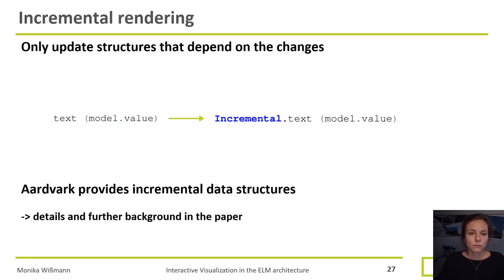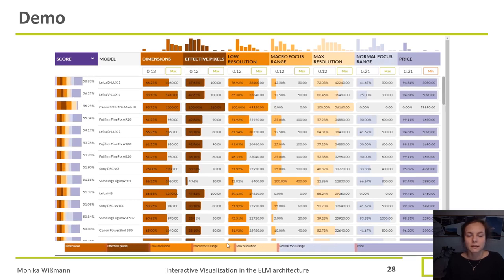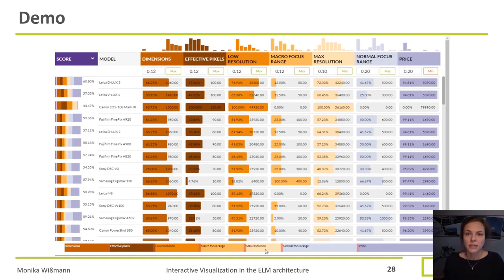If you want to know more details about the background of incremental rendering, please take a look at my paper. What we basically achieved is that we have only small changes in our code which help us make it much more performant. Let's check out our updated implementation now that we've added the incremental data structures for lists and maps in our view. We again try to drag the weighting bar and we see that the movements are now much smoother than before. We just changed a little bit of code and gained a lot of performance.